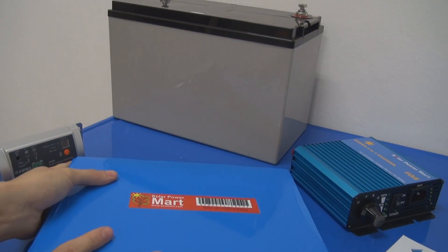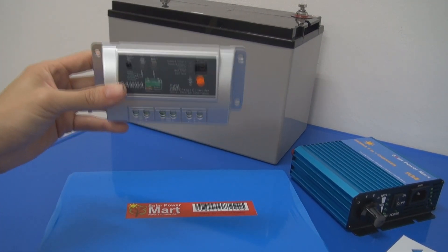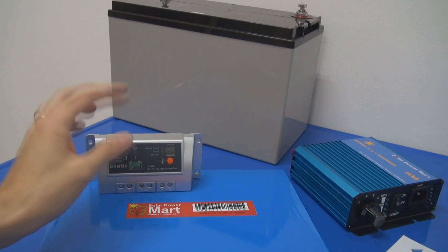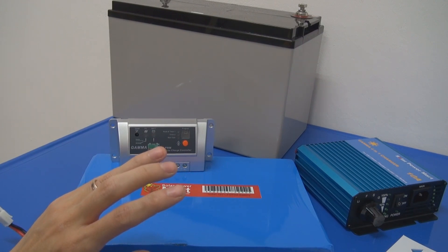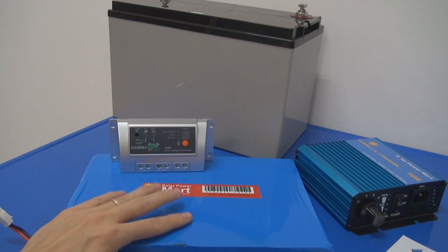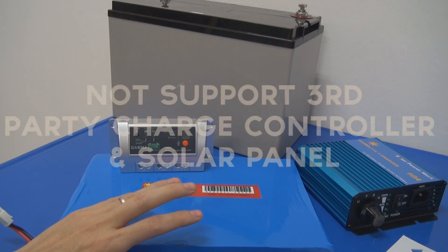So when you have a solar system with our controller that is designed for charging lithium, plus the BMS itself inside here, the Gamma BMS, we believe that the charging will be perfect and good. At the moment, we don't recommend other chargers or other solar systems to use our lithium battery at the moment.